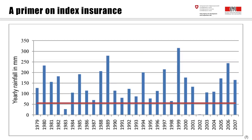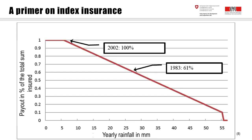Let's look at this graph. It shows yearly rainfall data in millimeters over a period of about 30 years. The red line indicates the level below which the index product would start to pay out — in this case, about 55 millimeters of rainfall. If you have less than 55 millimeters, you get an insurance payout. The payout is linearly correlated to the amount of rainfall, starting at 56 millimeters down to about 7 millimeters. In the example, in 1983, there was a payout of 61% because rainfall was about 27 millimeters.